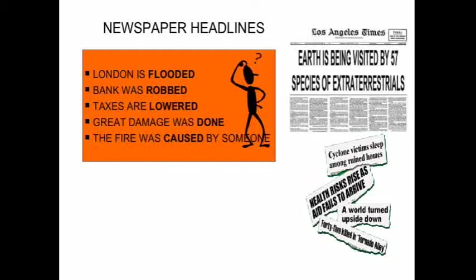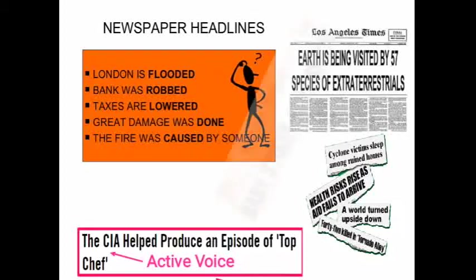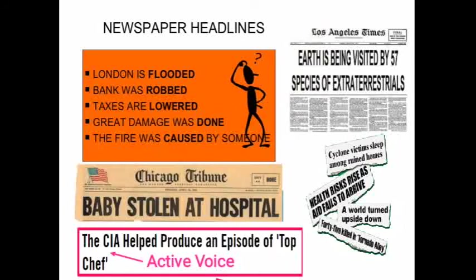More headline examples: 'Cyclone victims sleep among ruined homes', 'Wealth risks rise as aid fails to arrive'. Another example: 'The CIA helped produce an episode of Top Chef' — this sentence is in active voice, used when the doer is important. Mostly, newspaper headlines are written in passive voice because the receiver is the main focus. For example, 'Baby stolen at hospital' means 'Baby was stolen at hospital', but the helping verb is omitted.